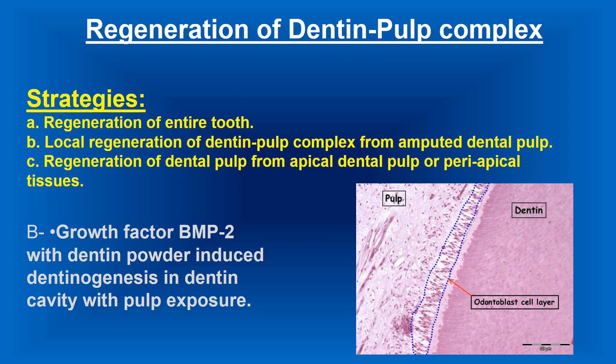Regeneration of the dentine-pulp complex can occur from amputated dental pulp. There is also regeneration of dental pulp from apical dental pulp or peri-apical tissues.